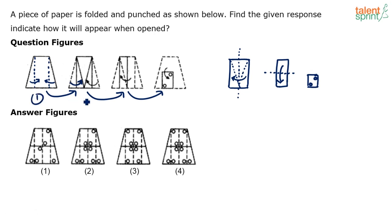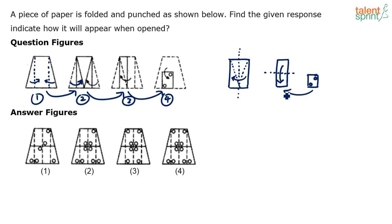To understand what it looks like when completely unfolded, do the reverse: go from 4 to 3. From 3 to 4 it was a water image - a horizontal fold was done. Observe this horizontal line; you have to take the water image along it. Horizontal line indicates a water image, vertical lines indicate a mirror image.